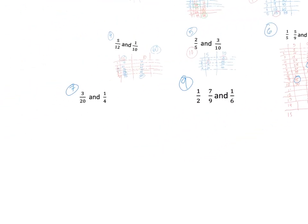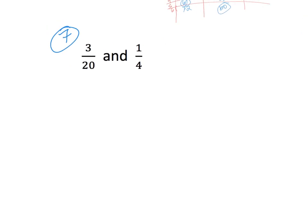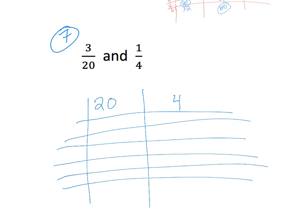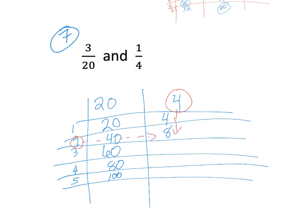For twenty and four: all you have to do is multiply this number by this number and then write it where they come together. So three times four is twelve, four times four is sixteen, and five times four is twenty. The smallest number that they both have in common is twenty.